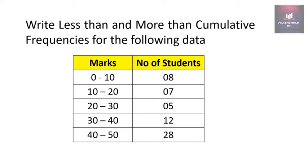The data consists of marks and number of students. Marks are in the range of 0 to 10, 10 to 20, 20 to 30, and so on till 40 to 50, and the number of students having marks in those ranges has been given.